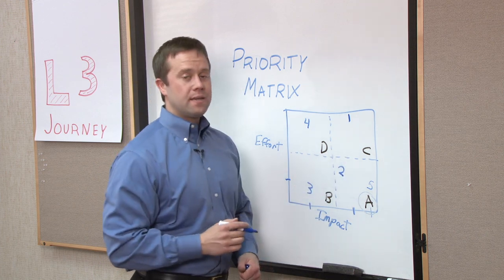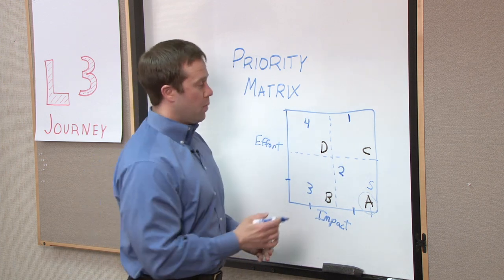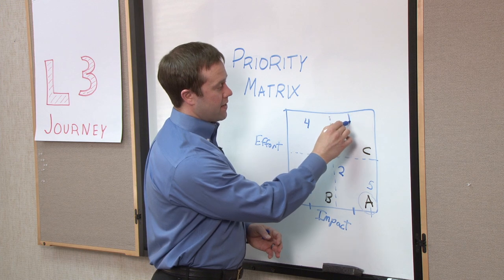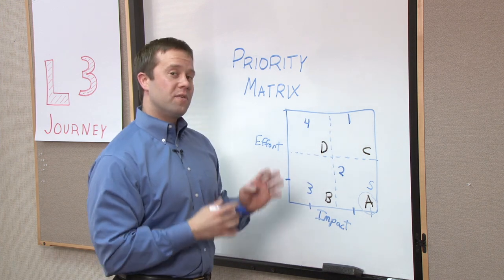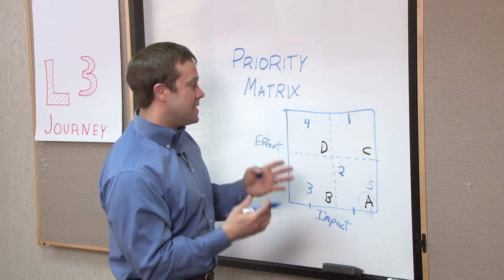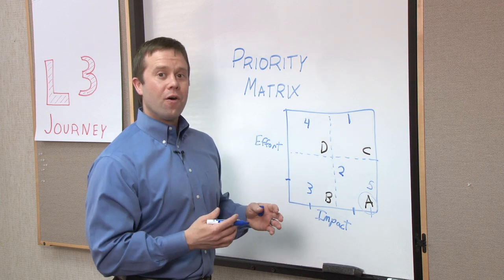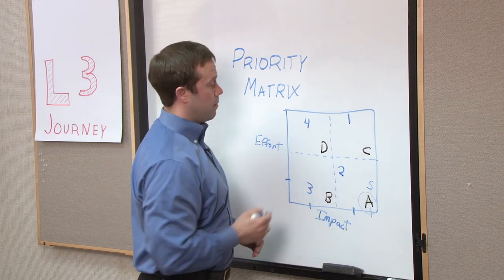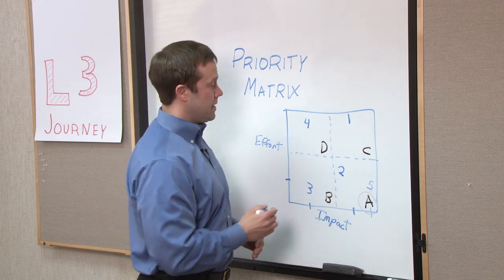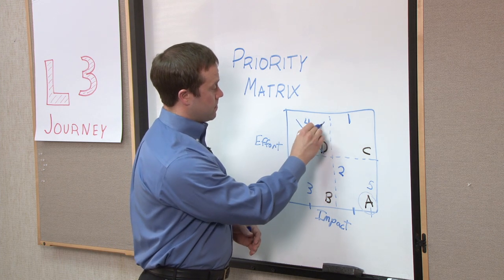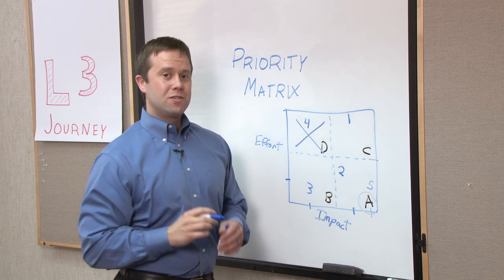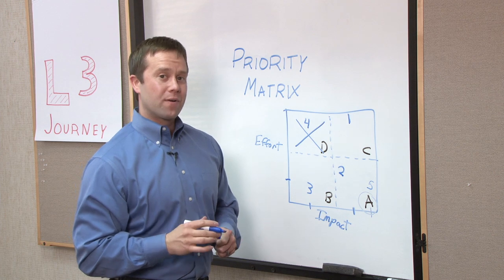Now we might consider projects in Area C, but we really want to make sure that there's a lot of consensus throughout the whole organization before we take them on, because there's a lot of difficulty, complexity, and effort involved. And when we look at project ideas in letter D, we want to deselect those. The effort that they're going to take is just not going to be worth their impact to the organization.